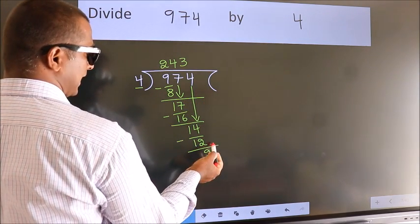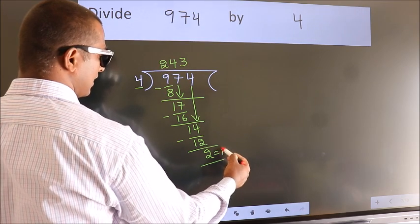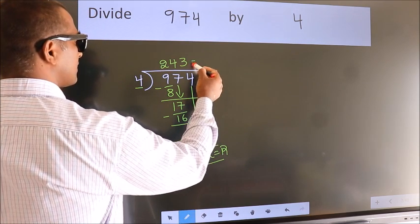No more numbers to bring it down. So we stop here. This is our remainder. This is our quotient.